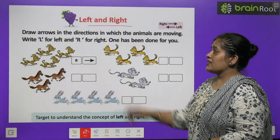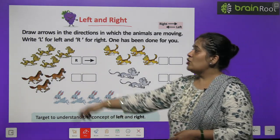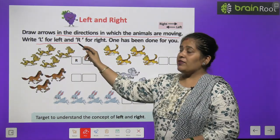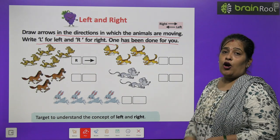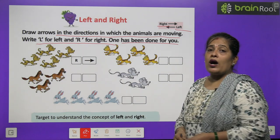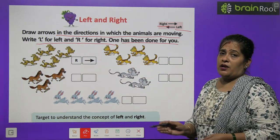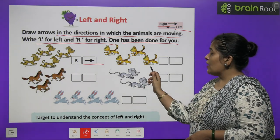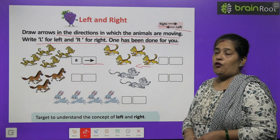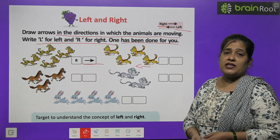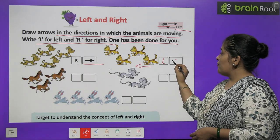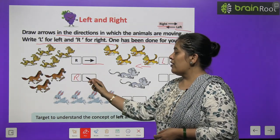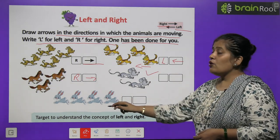The next topic is left and right — الٹا اور سیدھا. Draw an arrow in the direction in which the animals are moving: L for left and R for right. One has been done for you. تو بچوں، ان پیچروں کو دھیان سے دیکھئے — جو animals جس direction میں جا رہے ہیں، اگر وہ left میں جا رہے ہیں تو L لکھنا ہے۔ The horses are going in the right direction, so we write R for them. Next two questions you have to do by yourself.